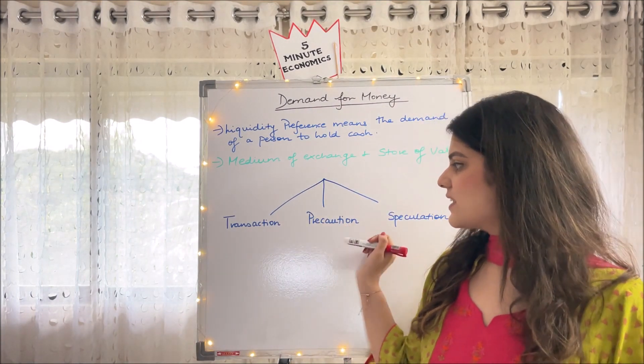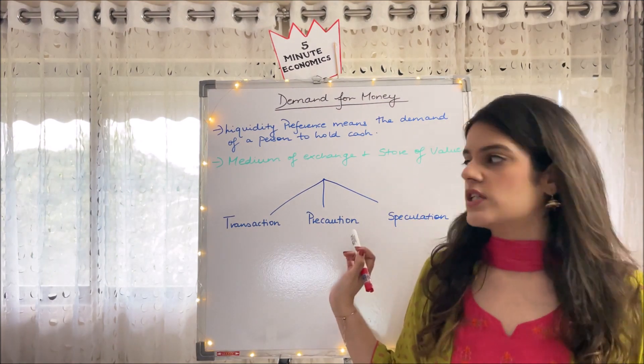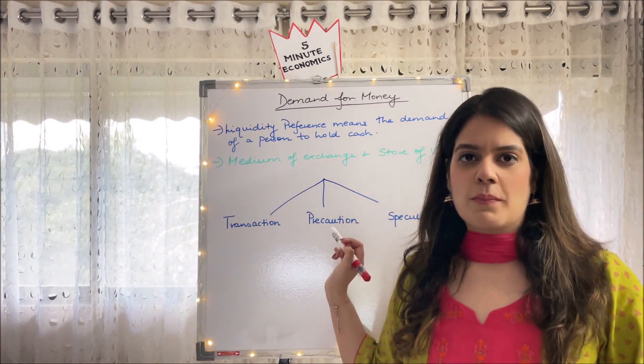One is transaction. Second is precaution. Third is speculation. So basically these are the three motives to demand for money.